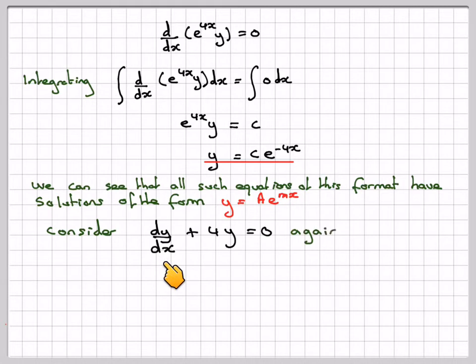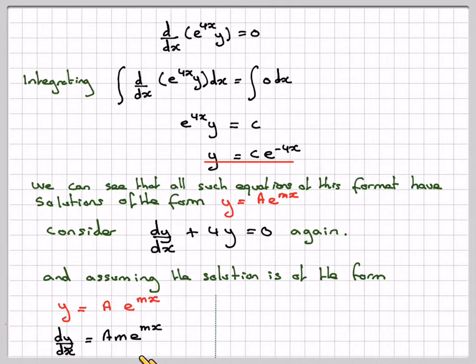So if you consider our original equation, dy by dx plus 4y is equal to 0 again. And assuming that the solution is of the form y is equal to ae to the mx. Now working backwards, if we differentiate that, we get am e to the mx. So we've got again ae to the mx. So that gives me dy by dx is my.